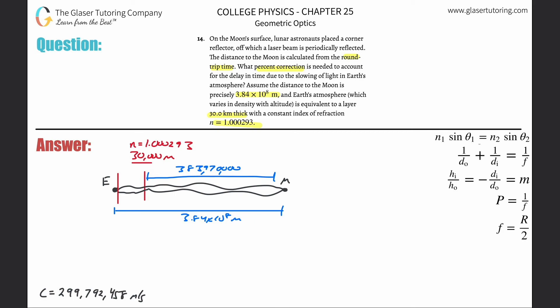Now, where do we go from here? Let's assume the atmosphere isn't there and calculate how long the trip would take. We use: velocity = distance / time, so time = distance / velocity. Since the light travels to the Moon and back, the distance is twice 3.84×10⁸, which is 7.68×10⁸ meters.